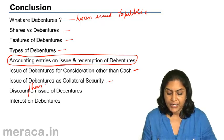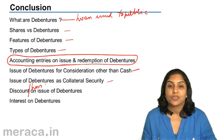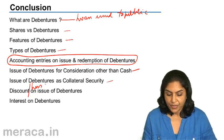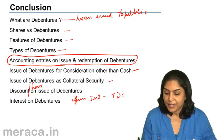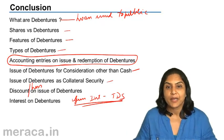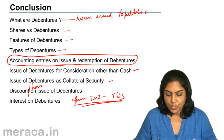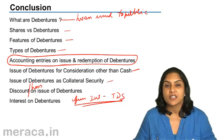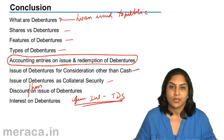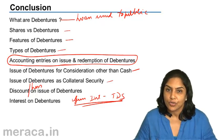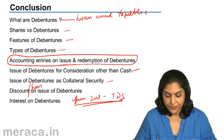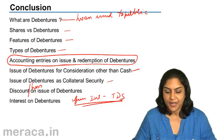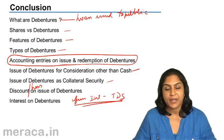Finally, we touched upon the accounting entries for interest on debentures: gross interest less TDS payable gives the net amount paid to debenture holders. We also understood two concepts — interest accrued and due, shown along with debentures, and interest accrued but not due, shown as a current liability. This covers our entire discussion on company accounts and issue of debentures. Thank you.